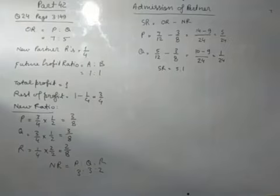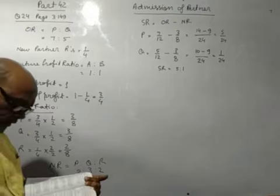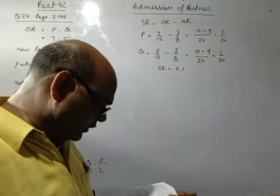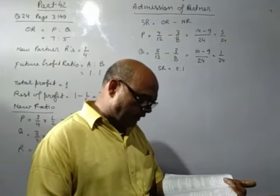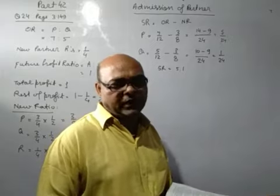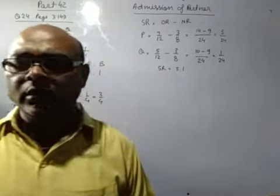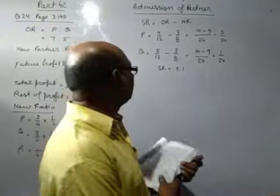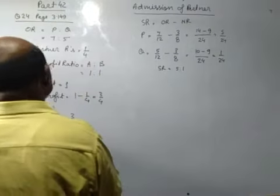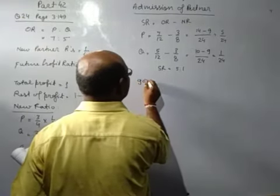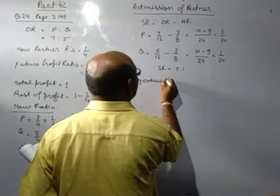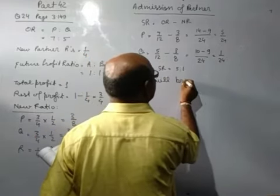Now see the entry for this, how you will record the entry for this. Now it is saying they admitted R into partnership for one-fourth share who paid 30,000 in cash for goodwill. So he paid the goodwill in cash. Goodwill brought in cash, this is the case.